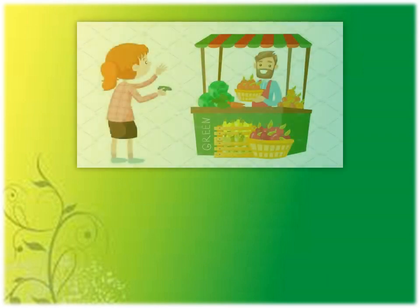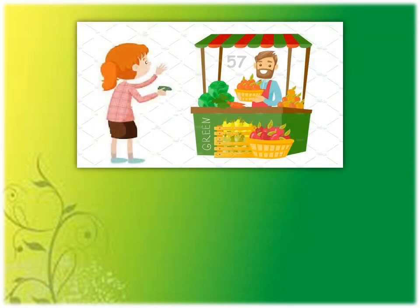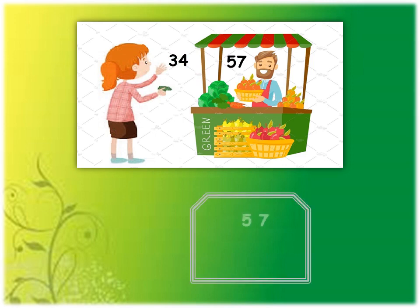Take the example of this shopkeeper. If he has 57 apples in his shop, out of which he sold 34 apples to the lady, and you have to find out how many apples are left, you will subtract 34 from 57. For that you will write 57 minus 34, and when you subtract you get 23. We can say that he has 23 apples left in his shop.